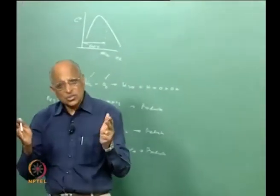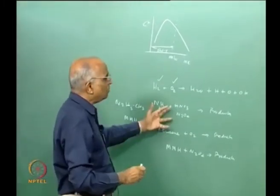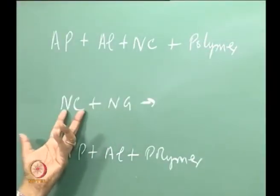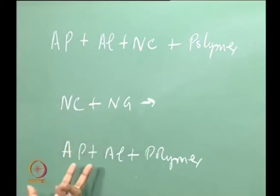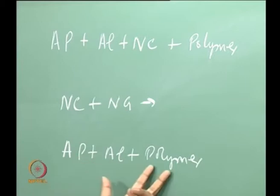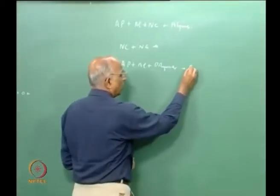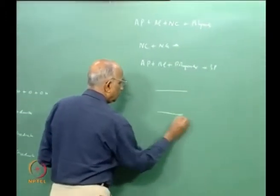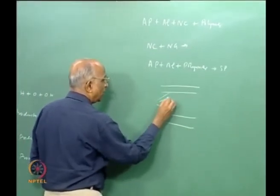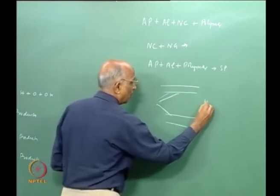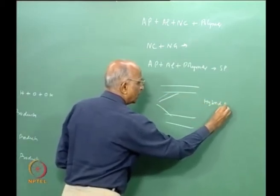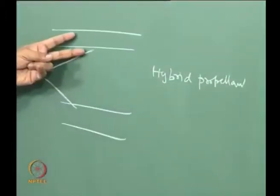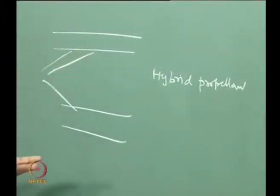The selection is somewhat limited based on our criteria. A double-base propellant uses two bases, each of which could serve as a propellant. For a composite solid, we use ammonium perchlorate, aluminum, and polymer. For a hybrid propellant, we take the polymer, cast it, and allow the liquid oxidizer to react with it. We ensure the rate of reaction keeps it fuel rich to get a high value of performance.